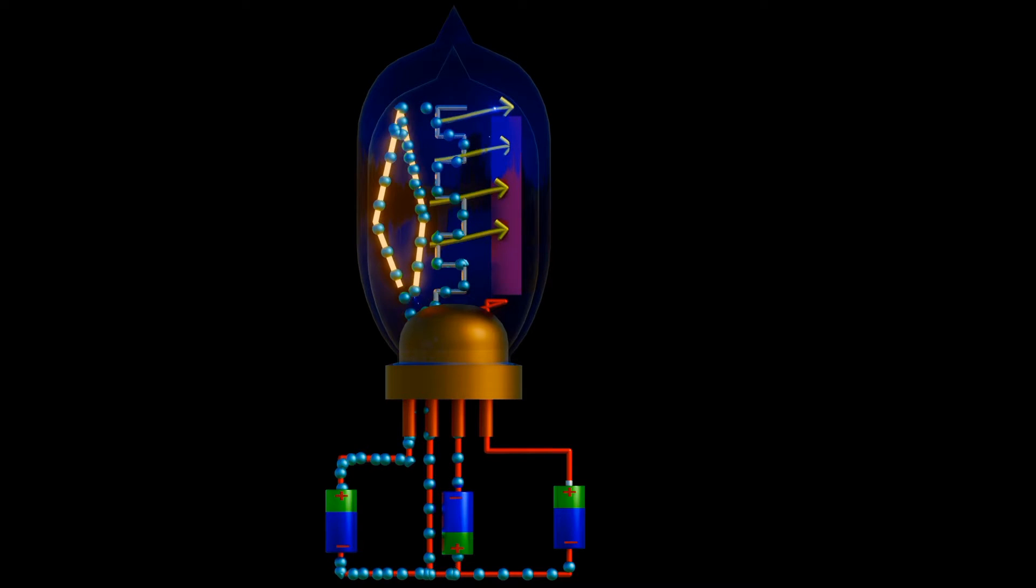At higher voltages these emitters were damaged, so tungsten or thoriated tungsten was used. For power applications, these materials could withstand temperatures as high as 2400 degrees Celsius.